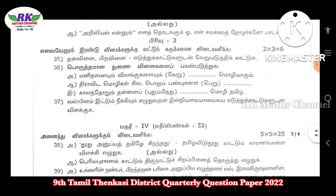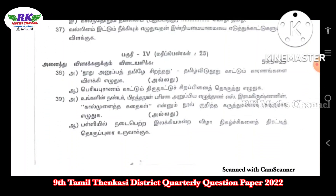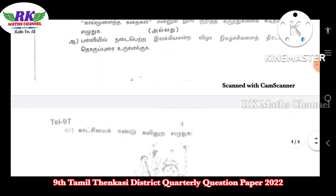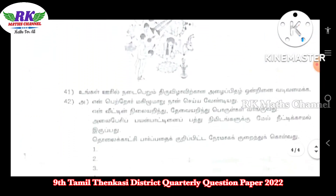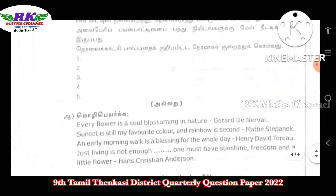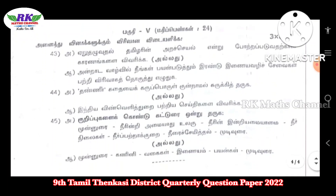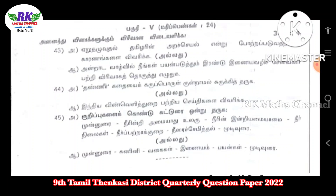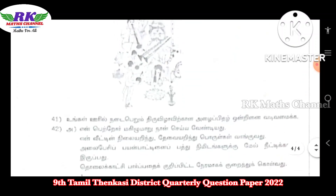Section 3: look at 2 questions, 2×3 are 6 marks. Next, Section 4: look at 5 questions, 5×5 are 25 marks — each question has a choice, look at this diagram or picture. Next, Section 5: look at this — 3×8 marks questions, 3×8 are 24 marks, each question is 20. So this is the 9th class Tamil question paper.